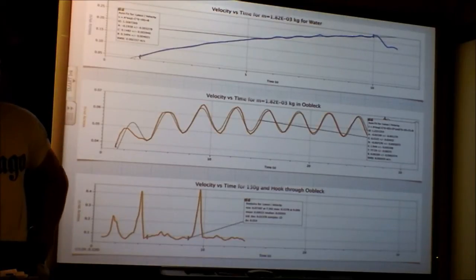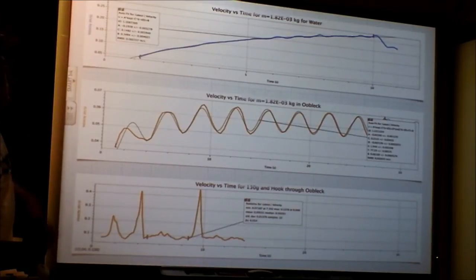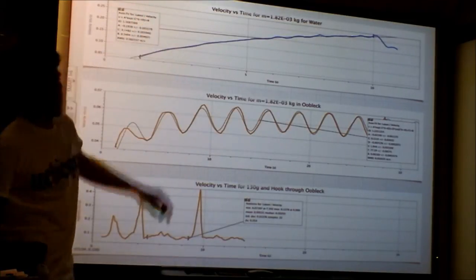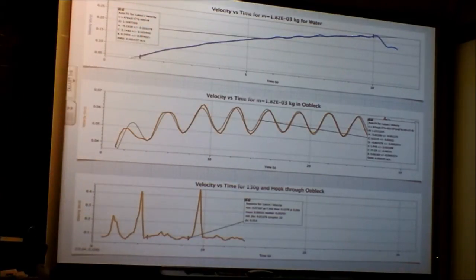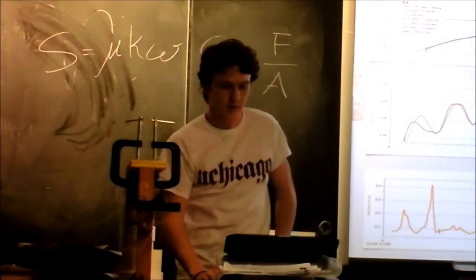I dropped it from about this high. So I just fit it with an exponential function. And the value that it's increasing to here is v. Because a normal exponential function just approaches zero. So whatever constant is at the end there is the terminal velocity.